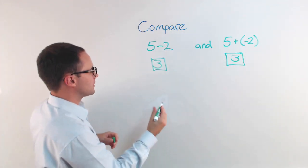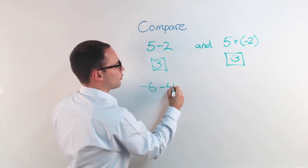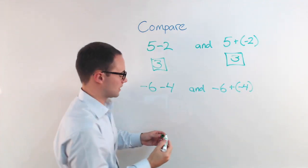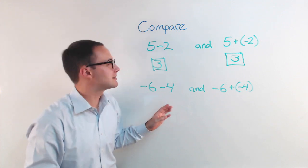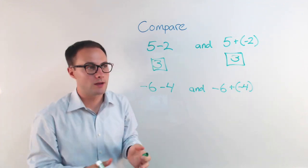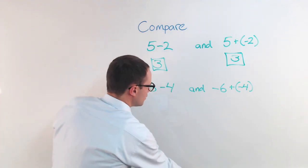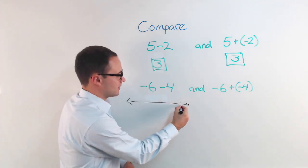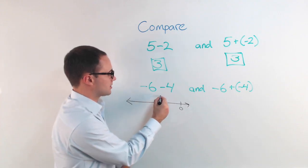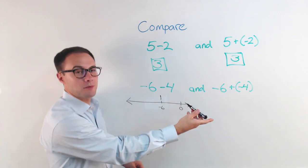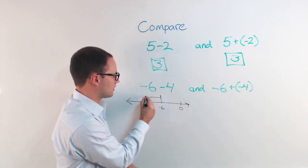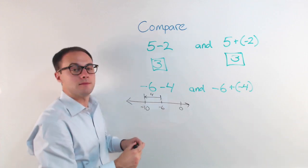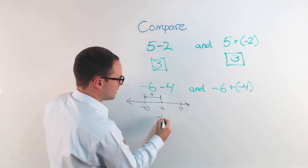Let's try another one. If we did negative 6 minus 4 and compare that to negative 6 plus a negative 4. Well, negative 6 minus 4, it's a little more difficult than this. You can think of it using a number line. So I'm starting at negative 6, here's 0, maybe there's negative 6. I'm starting there and I'm subtracting 4 which means I'm going to the left. When we subtract, going to the left, 4, that would put me at negative 10.